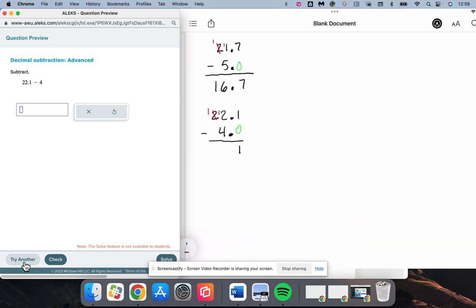12 minus 4, and recognize that we need to line the decimal up still. 12 minus 4 is 8. 1 minus 0 is 1. 18.1.